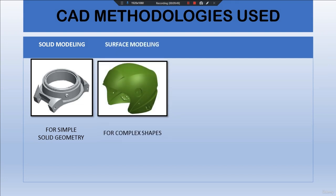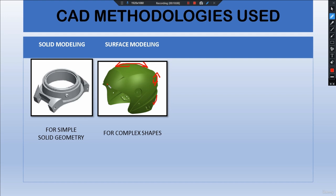The second methodology is surface modeling. This method is used for generally complex shapes. As you can observe, one cannot measure these arcs or certain features of an object using conventional tools. So we take the help of scan data and start performing surfacing operations on it.